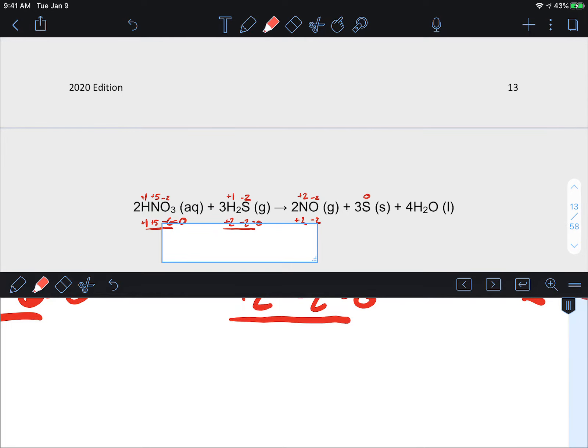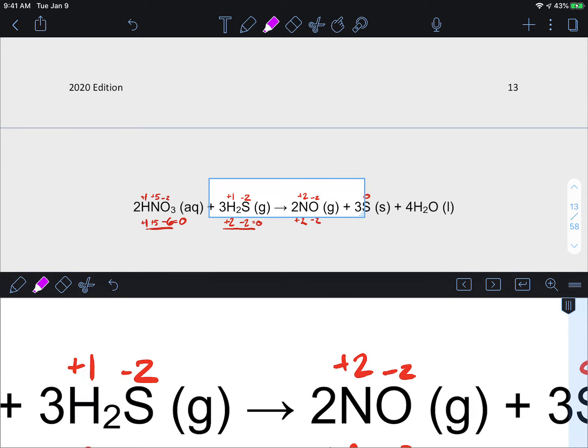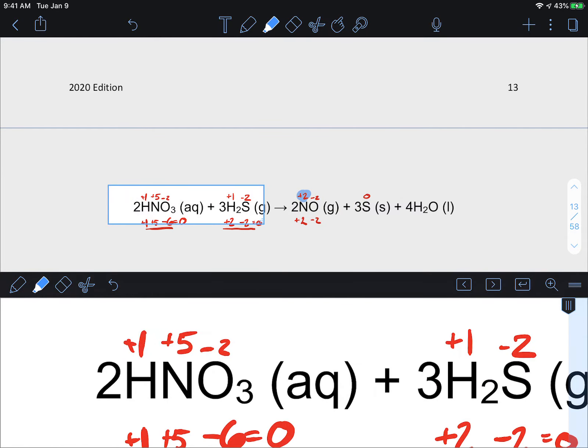Okay so now we want to look and identify where has there been a change. Well the nitrogen has a plus two here. I'm going to change colors so that it looks a little nicer. Plus two here and the nitrogen over here has a plus five. We ignore the bottom numbers, that's just work that we did below.